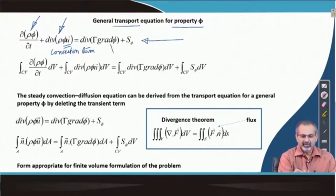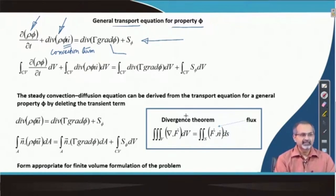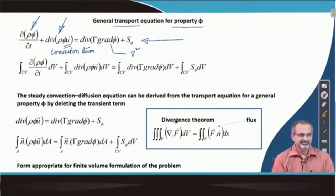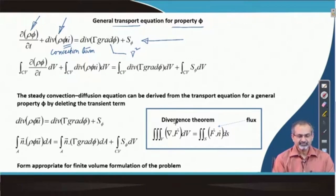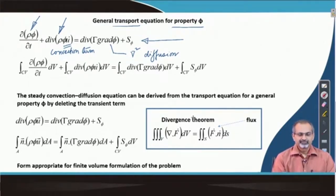On the right-hand side, you have again a divergence, but this time divergence applies on a gradient — the gradient of a scalar. That essentially ends up producing the Laplacian, but you also have a coefficient gamma. That coefficient gamma could be a function of space; if it is, it remains within the bracket. If it happens to be a constant, it can come out of that bracket. This term is called the diffusion term because it involves second-order derivatives of the property.